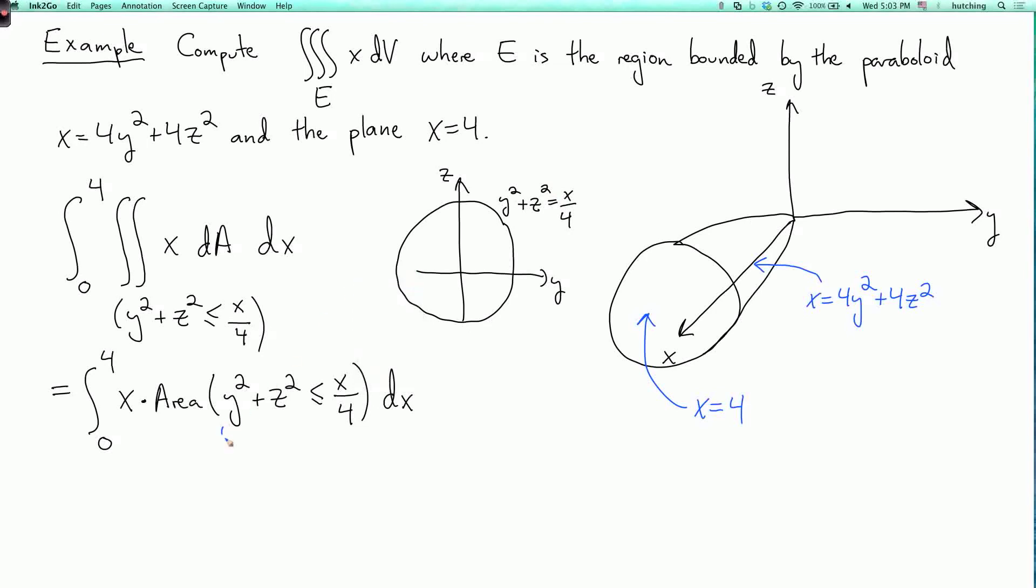So this region is a disk of radius square root of x over 4. And its area is pi times radius squared. So I have the integral from 0 to 4 of x times pi times the radius squared, which is x over 4, and then dx.